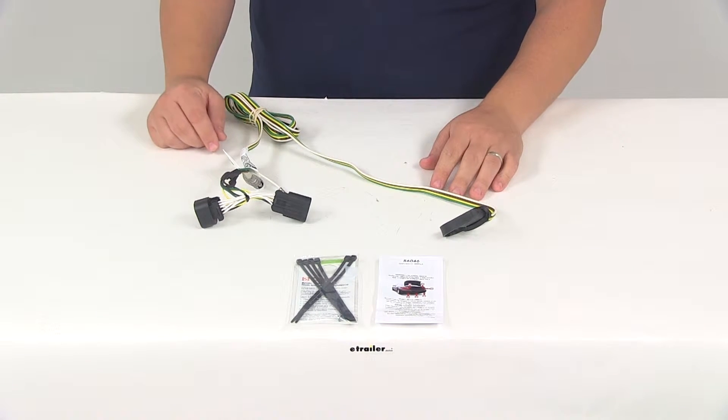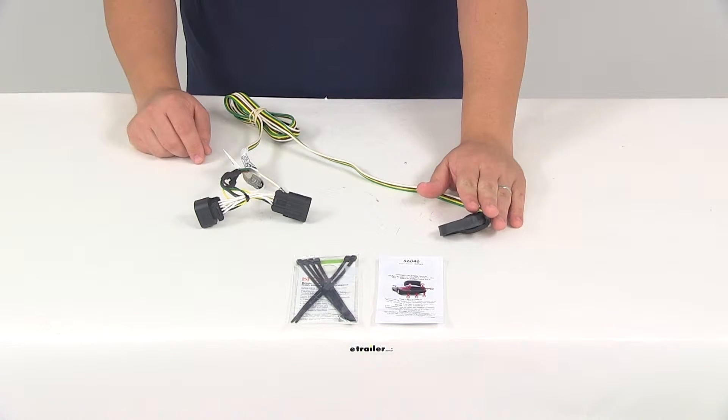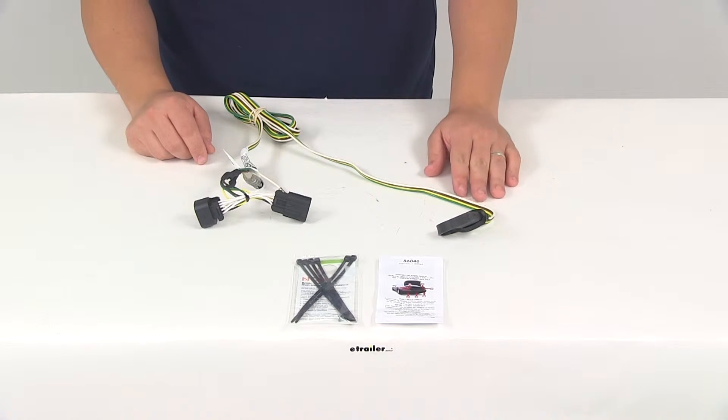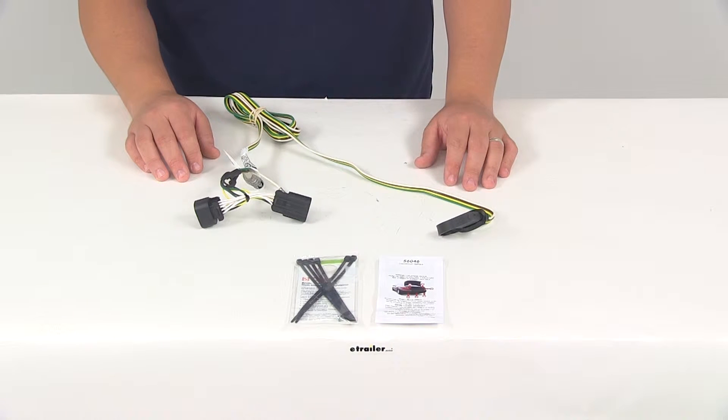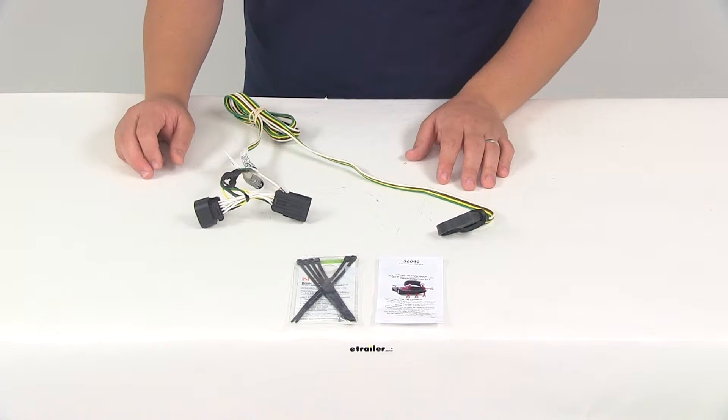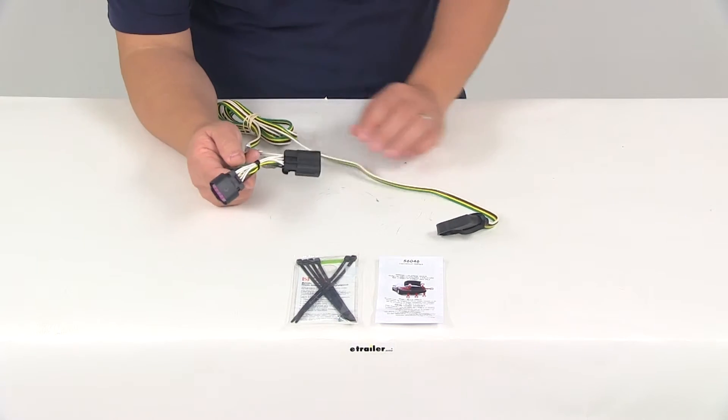Now the main benefit of the system is not only the four-way flat connector but it's designed to connect quickly and easily so you don't have to cut or splice any wires. All you have to do is locate the connection points behind the passenger side tail light and plug in your T connector.